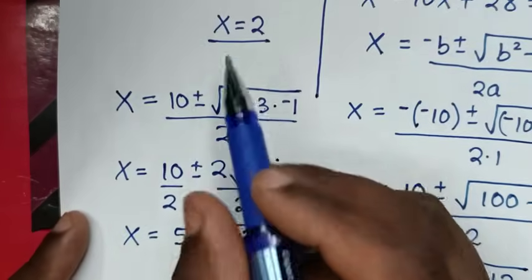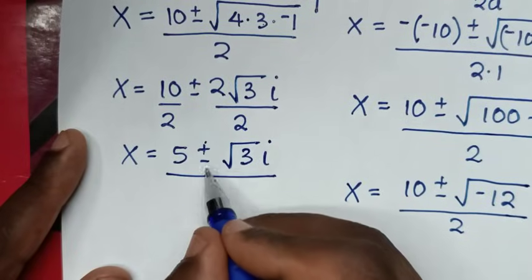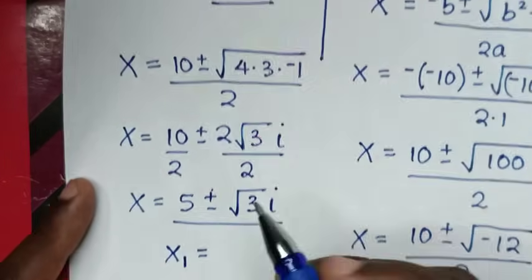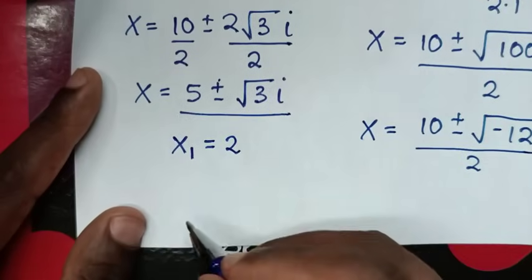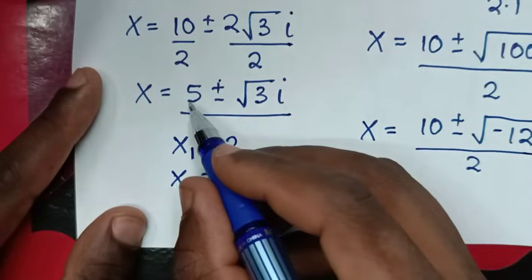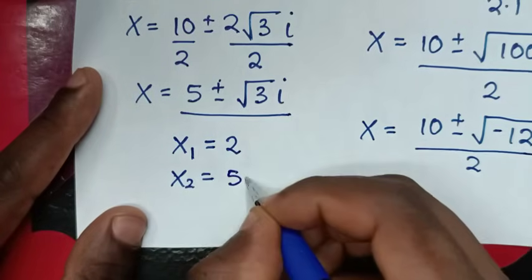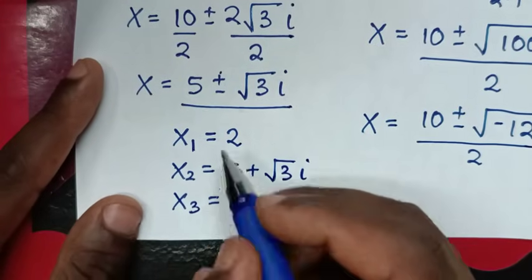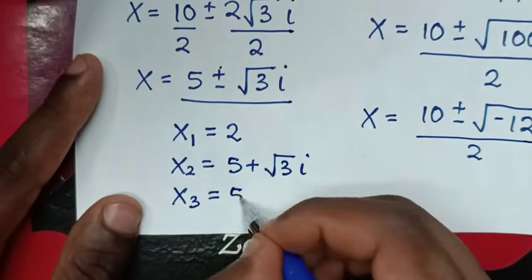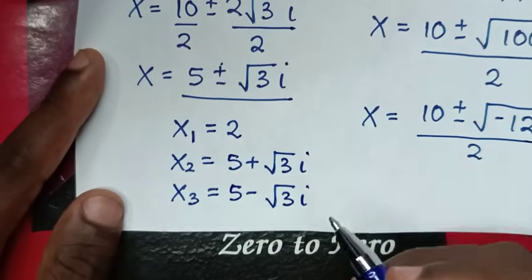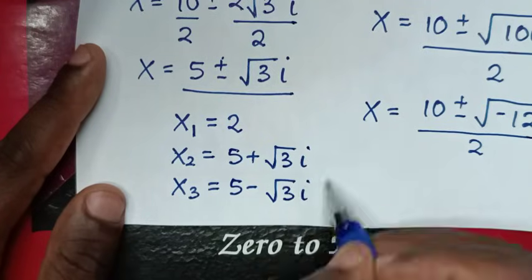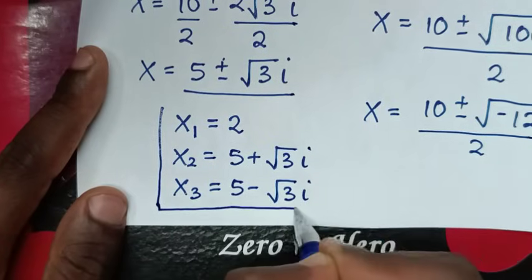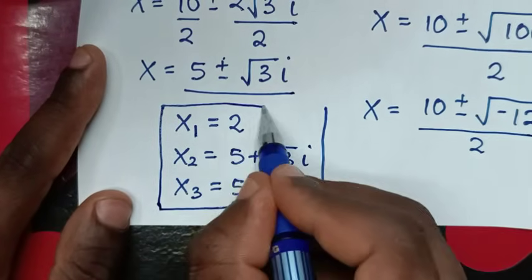Because of the ± sign, we have two complex solutions from the quadratic: the second value of x = 5 + √3·i, and the third value of x = 5 - √3·i. These are the complex solutions, while x = 2 is the real solution. Therefore these are all three values of x for this problem.